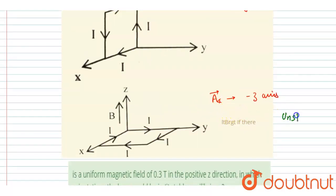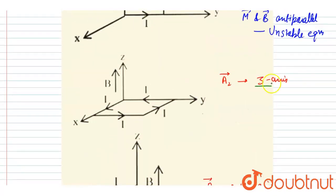In this case it is anti-parallel, so this will be unstable equilibrium. And this will be stable equilibrium.